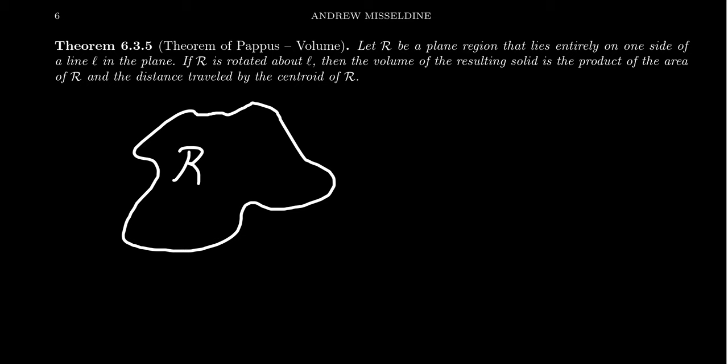It has some fixed area, even if that might be a difficult thing to compute, but it has an area nonetheless. And so we have this region R, it's in the plane, and it lies entirely on one side of some line L. Now this line L is going to act as an axis of revolution.